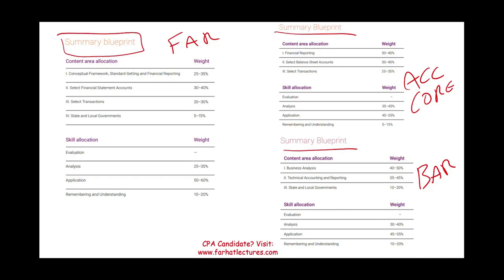Let's take a look at the overview. The old FAR has four sections. The new core accounting has three sections. The state and local government section is gone — it's no longer under the core. Also gone is the conceptual framework and standard setting. What's left is financial reporting. We also now have selected balance sheet accounts specifically, rather than selected financial statements and selected transactions.